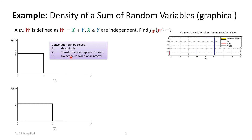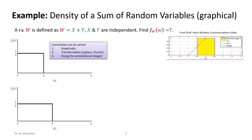Convolution can be done graphically, by Laplace transform, or by executing the convolution integral directly. I have a video on graphical convolution — I'll share the link in the comment section. In graphical convolution, one function moves across the other; you invert, shift, multiply, and then integrate. So basically one rectangle slides across the other.